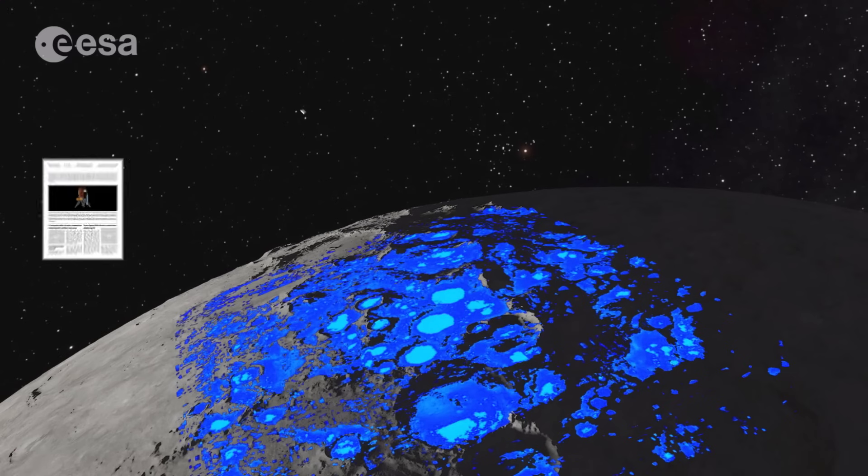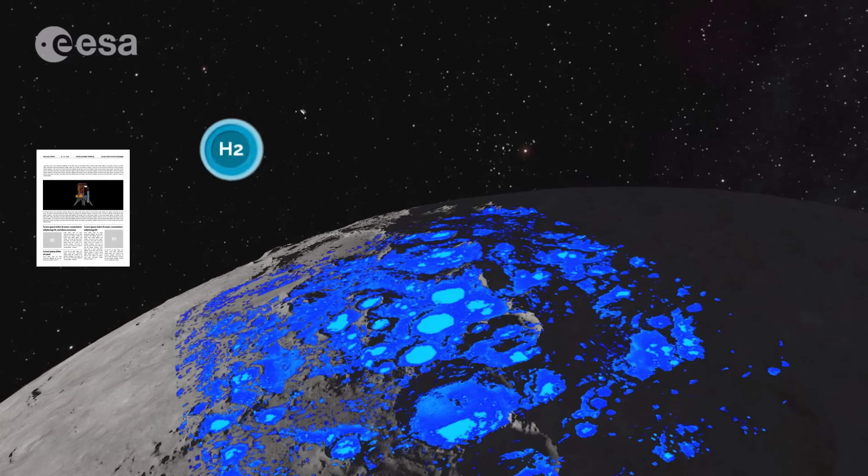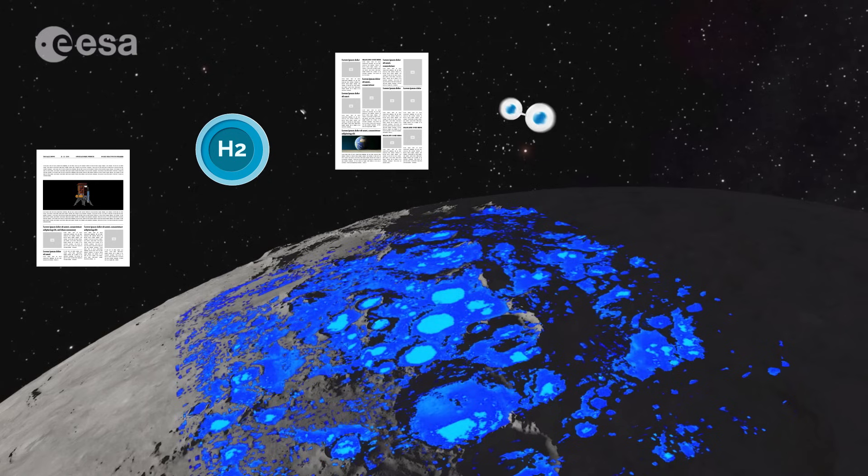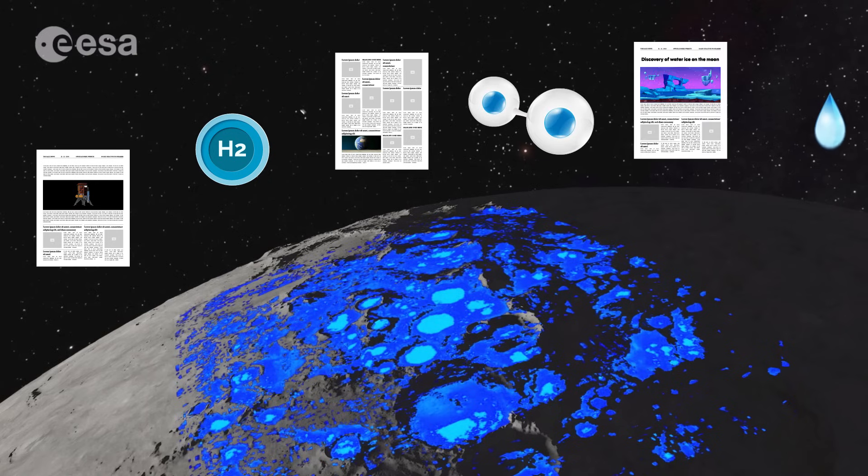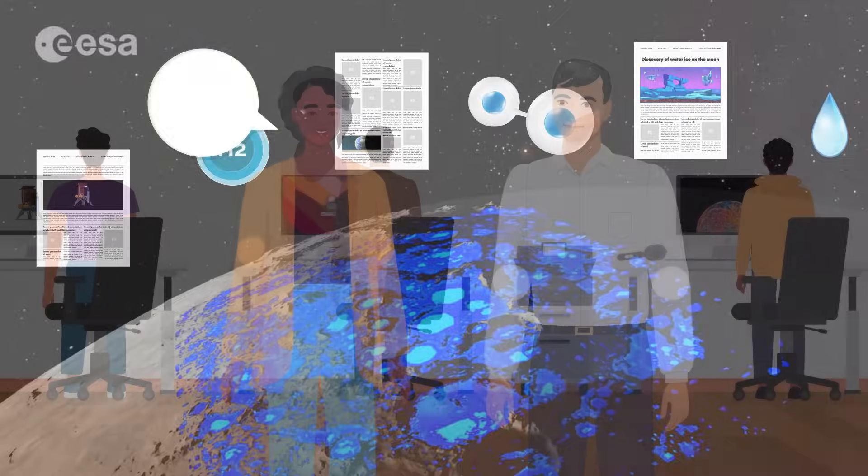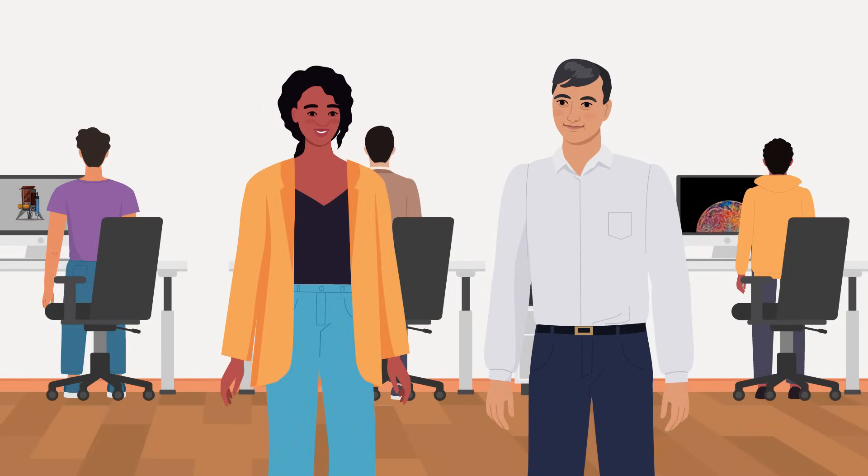In recent years, scientists have accumulated a tantalizing body of evidence for abundant water ice on the Moon, with data suggesting that certain regions could harbor far more than previously thought. However, questions remain over how much is really present, what form it takes, and where it originated.